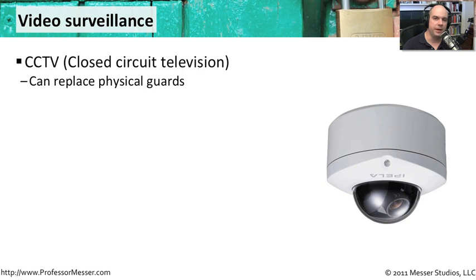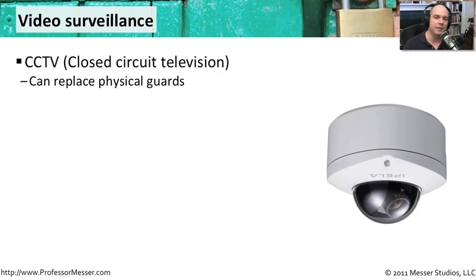Video surveillance used to be very costly, but the costs have dropped dramatically, especially now that these are all network systems. We don't have tapes in separate units — we're all doing this digitally and storing that information on a disk. It becomes very easy to deploy video systems in your environment. If these are video systems that you're using, you'll sometimes hear them referred to as closed circuit television or CCTV. That way, you don't have to have somebody physically watching a corridor or access to a room — not only are you able to see that in real time, but you're also able to store that information for later.